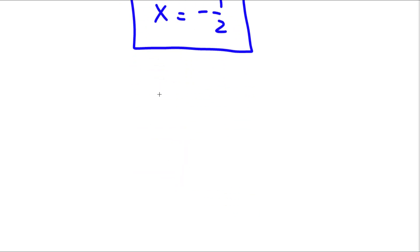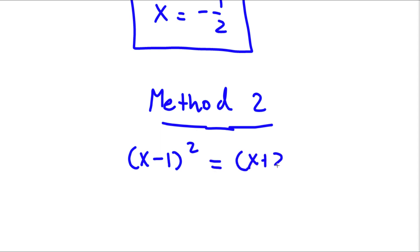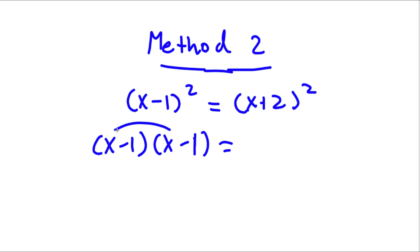I actually have a second method to solving this problem. So method 2: our original equation was x minus 1 squared is equal to x plus 2 squared. So x minus 1 squared — let's first evaluate this. x minus 1 squared is the same thing as x minus 1 times x minus 1. So let's go ahead and multiply these two: x times x is x squared.